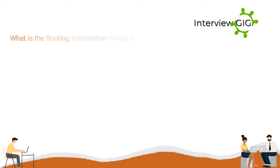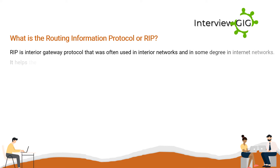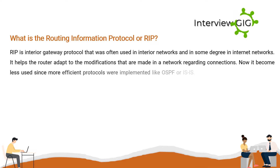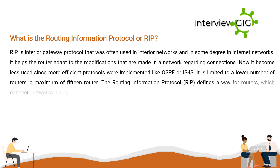What is the Routing Information Protocol (RIP)? RIP is an interior gateway protocol that was often used in interior networks and to some degree in internet networks. It helps the router adopt modifications made in a network regarding connections. It has become less used since more efficient protocols were implemented, like OSPF or IS-IS. It is also limited to a maximum of 15 routers.